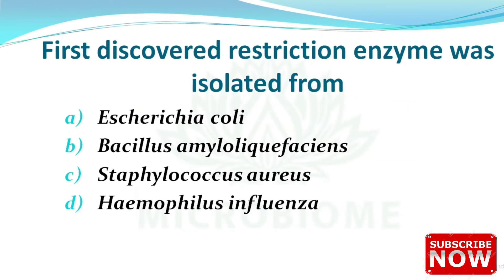Next: the first discovered restriction enzyme was isolated from which organism? The options are Escherichia coli, Bacillus amyloliquefaciens, Staphylococcus aureus, and Haemophilus influenzae. The right answer is option D — Haemophilus influenzae.